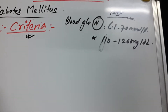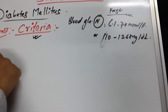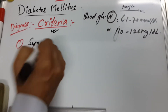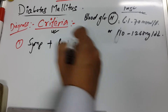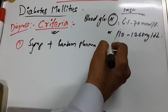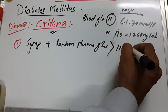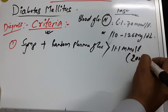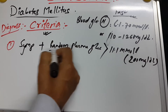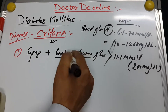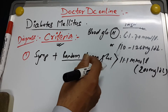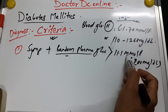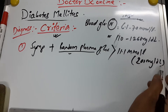The first criterion for diagnosing diabetes mellitus is symptoms plus a random plasma glucose of more than 11.1 mmol/L, or 200 mg/dL. Random plasma glucose means a blood sample taken at any time when the patient comes to the hospital. If it is more than 11.1 mmol/L or 200 mg/dL and the person has symptoms, you should suspect diabetes mellitus.